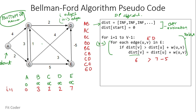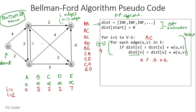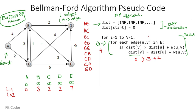Now we run for I equal to 2. Edge AB: distance of B (3) is not greater than distance of A (0) plus AB (4), skip. Edge AC: distance of C (2) not greater than 0 plus 2, skip. Edge BC: distance of C (2) not greater than distance of B (3) plus BC (3), skip. Edge BD: distance of D (2) not greater than distance of B (3) plus BD (2) = 5, skip. Edge BE: distance of E (7) is greater than distance of B (3) plus BE (3) = 6, so distance of E becomes 6.